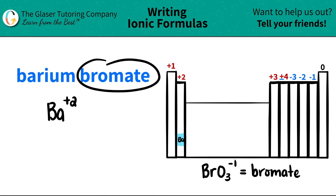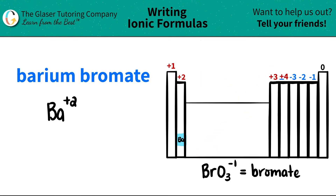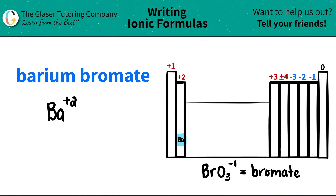Now I move over to bromate. I see that it's an -ATE ending, and remember, all -ATE endings are polyatomic ions — they are never going to be on the periodic table, you have to memorize them. Bromate is BrO3 and it has a negative one charge.